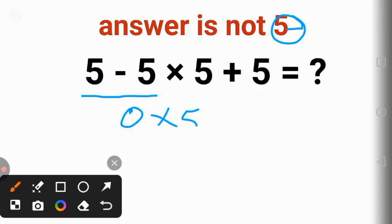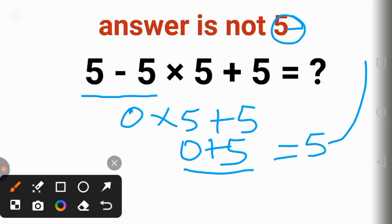0 times 5 plus 5. Now 5 times 5 will give us 0 times 5, which gives us 0 plus 5. Now 5 plus 0 will give us 5. You can see, so the answer is not 5. This is the wrong answer.